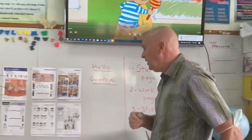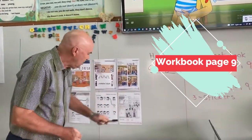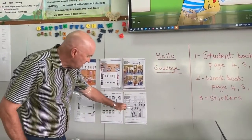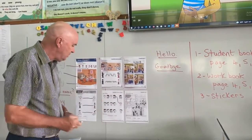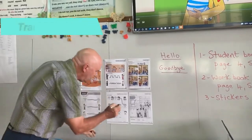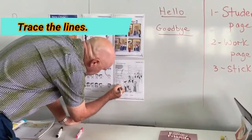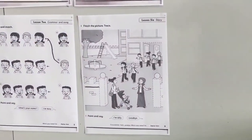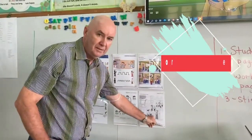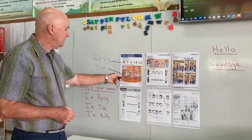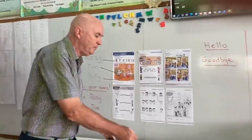So first, if you go to workbook page 9 — here you can see Rosie, you can see Tim, you can see the school, you can see Billy. And there are a few little lines for you to trace. See if you can trace carefully. Workbook page 9 — Tim, Rosie and Billy.